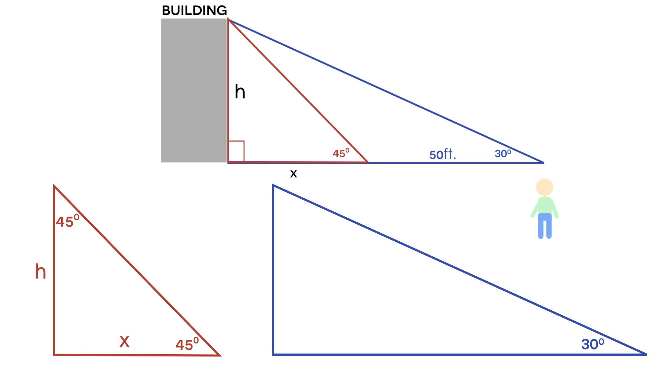And since we have two angles that are 45 degrees, we also know that this is an isosceles triangle. And because we know this is an isosceles triangle, we know that the bottom side is going to be equal to the left side. So, x is equal to h.